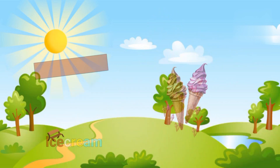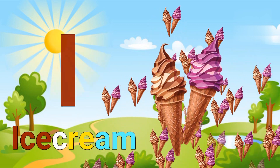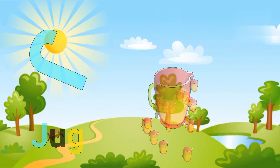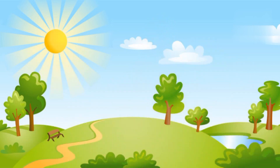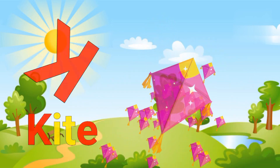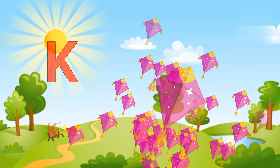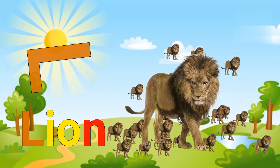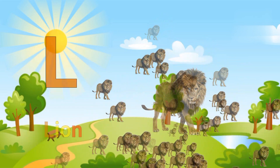I for ice cream, J for jug, K for kite, L for lion.